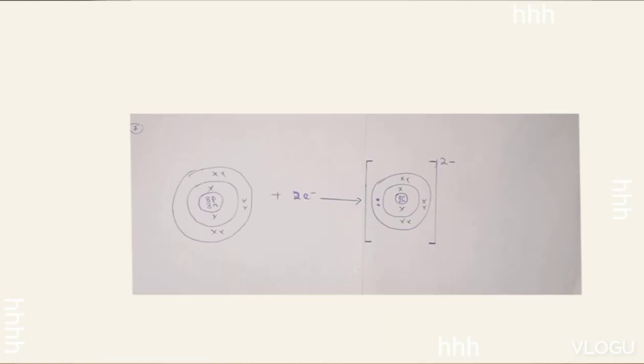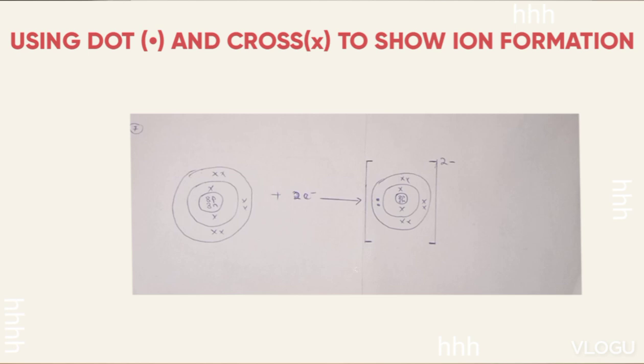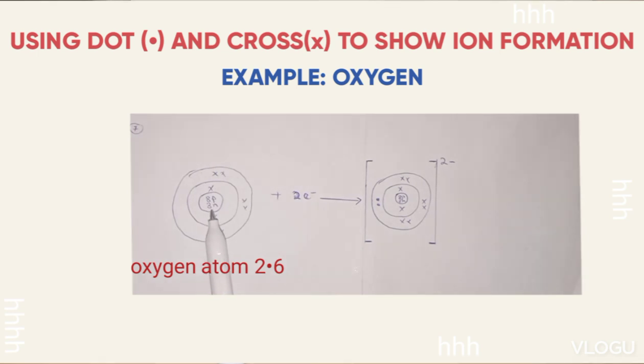The last part is using dot and cross to show ion formation when electrons are gained. And I take an example of oxygen, which is 2.6. The atom is here, has got 8 protons and 8 neutrons in the nucleus.